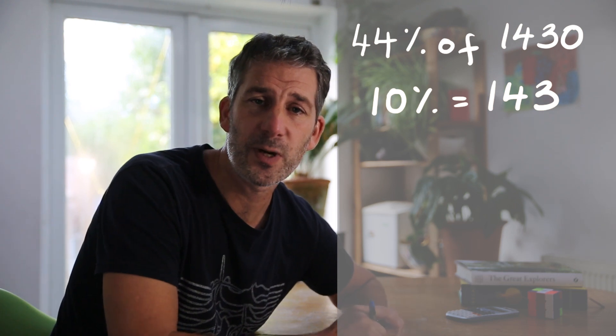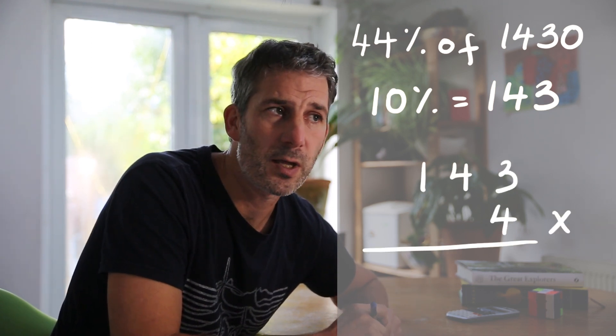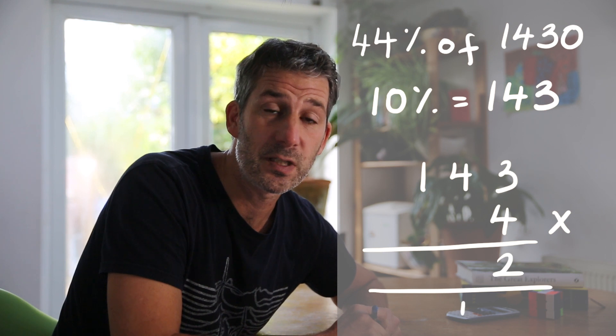So let's say I'm going to find 44% of 1430. So I'm going to start by finding 40%, and to do that I'm going to find 10% and then times it by 4. So 10%, we just divide by 10, so that'll be 143, and then to find 40%, I've got to multiply that by 4, which I think that gives me 572.